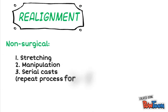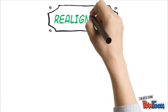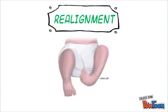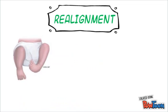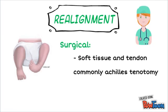Gradual stretching, manipulation and repositioning of the foot, followed by immobilization in a long leg plaster cast from thighs to toes, is repeated weekly until the deformity is largely improved. Forefoot adduction and hindfoot varus are the first to be corrected, followed by hindfoot equinus. If non-surgical management is not satisfactory, the orthopedic surgeon can perform soft tissue surgery to lengthen tendons and allow increased mobility.